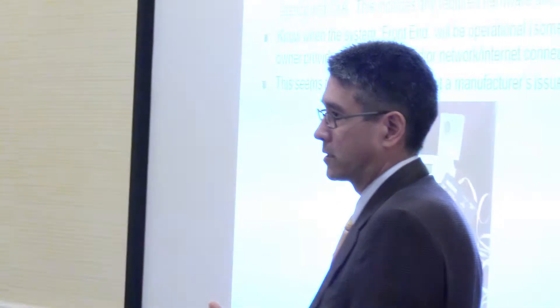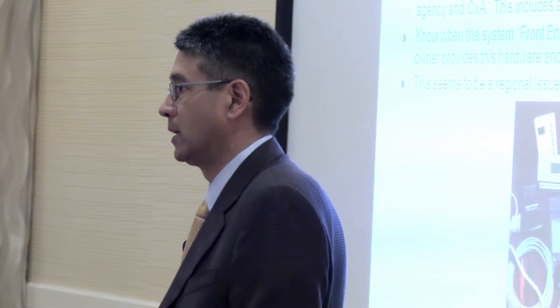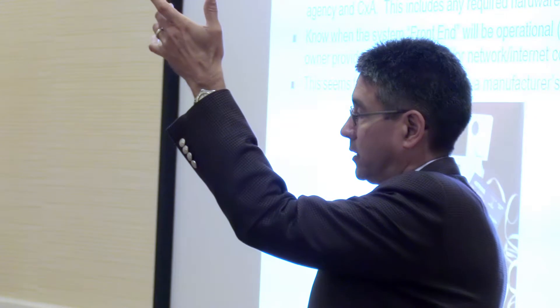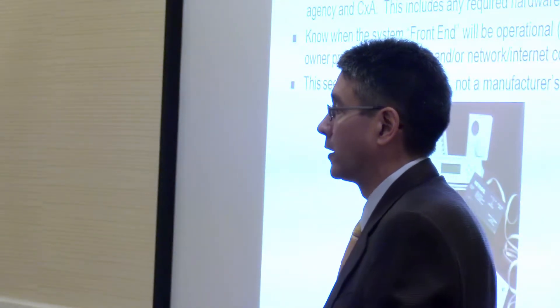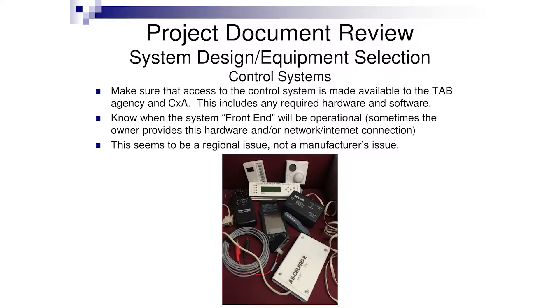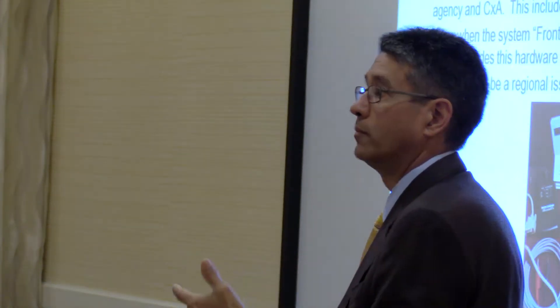Make sure all the proper interfaces are available — user-friendly for the owner, but also for the commissioning agent and the TAB technician. So many controls systems are going web-based, app-based, and some are going wireless, which means you may not need to climb a ladder and plug a cable into a box. Bring the conversation up early on a project: who's providing the front-end and who's providing the internet connection, and when will it be live? Sometimes you need that availability when you're commissioning or balancing.